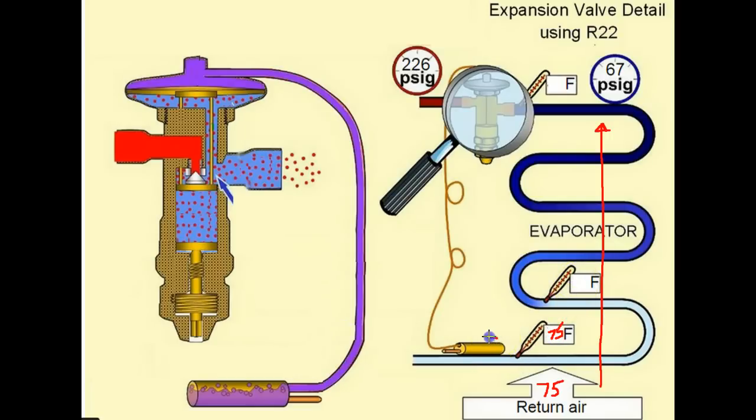So this bulb, the sensing bulb right here, is sensing 75 degree Fahrenheit suction line temperature. This and that and this bulb is the same as this bulb. So this is sensing 75 degrees.